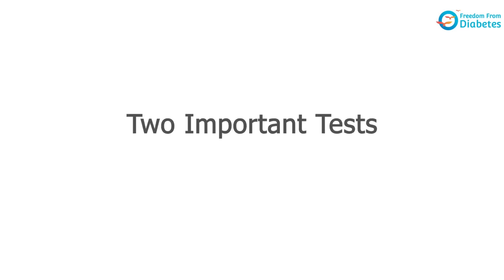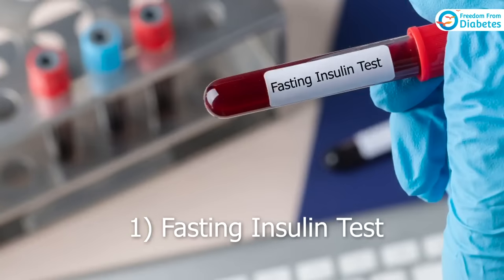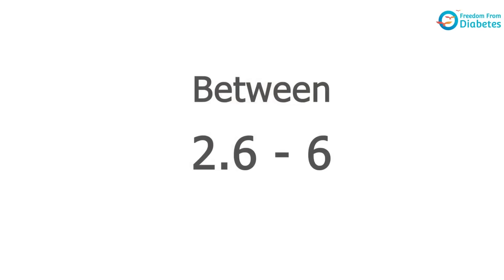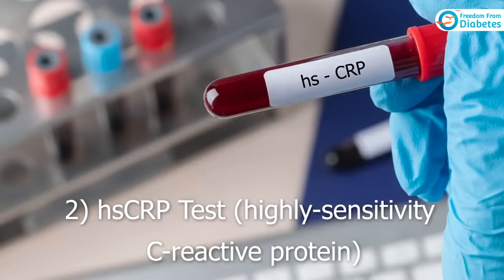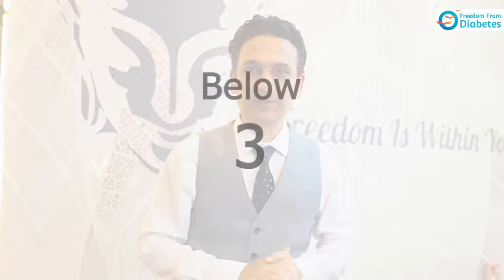Besides waist measurement, do two important blood tests. First, the fasting insulin test — fasting insulin should be between 2.6 to 6. If it's more than 6, you are resistant to insulin and secreting too much. Second, the HSCRP test — highly sensitive C-reactive protein — and ensure that number is below 3, ideally below 1.